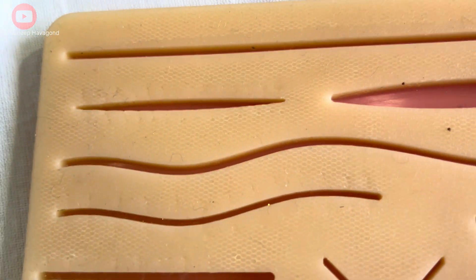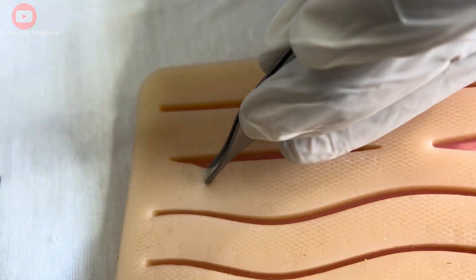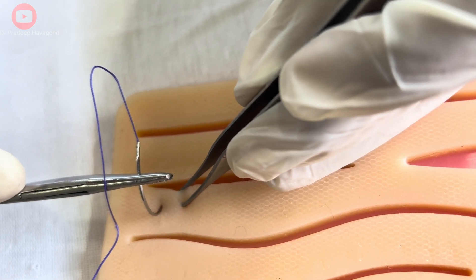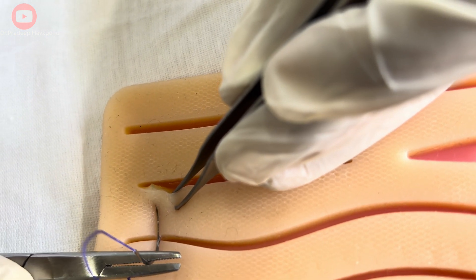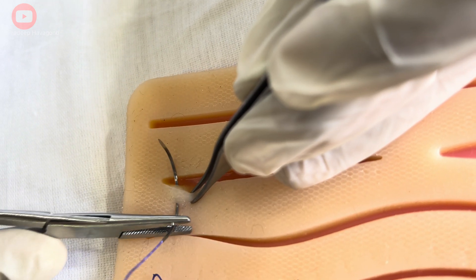In one hand, you have to hold the toothed forcep, and on the other hand, you have to hold the needle holder. Start by threading your needle through the tissue at a 90 degree angle. With the help of toothed forcep, raise a flap. The needle has to be inserted at 90 degrees.